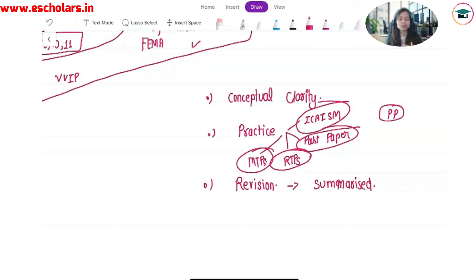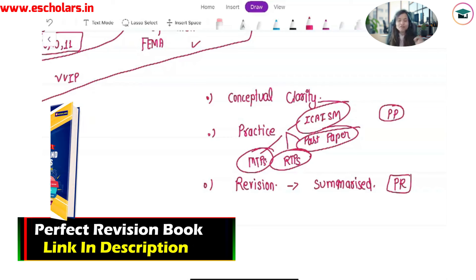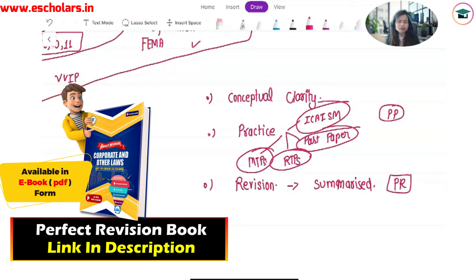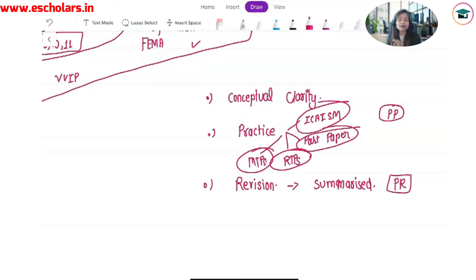Conceptual clarity, practice, and revision. We offer you a perfect revision book. This book is in a very summarized form. It will provide you all the chapters without missing any single thing from your module, but in a very summarized and crisp manner. Perfect practice and perfect revision. Then, what is the tension? If these two things are available to you, then you can easily score 60 marks in the subject of law.